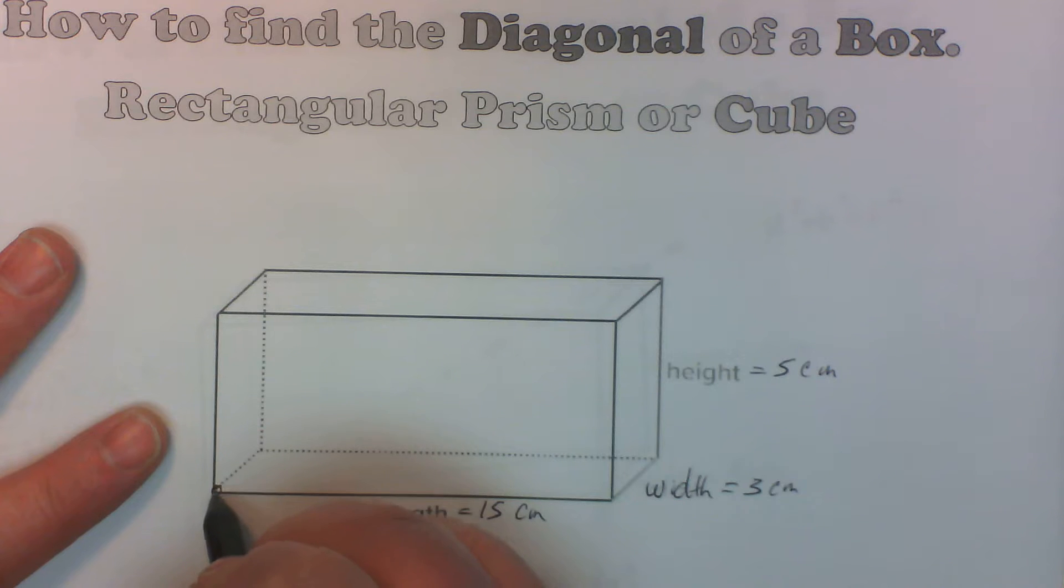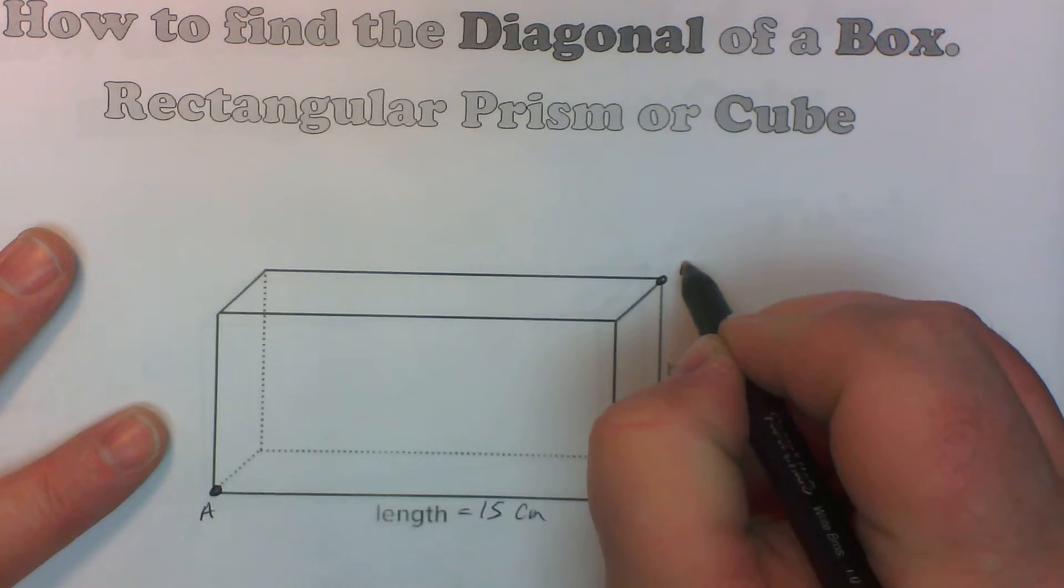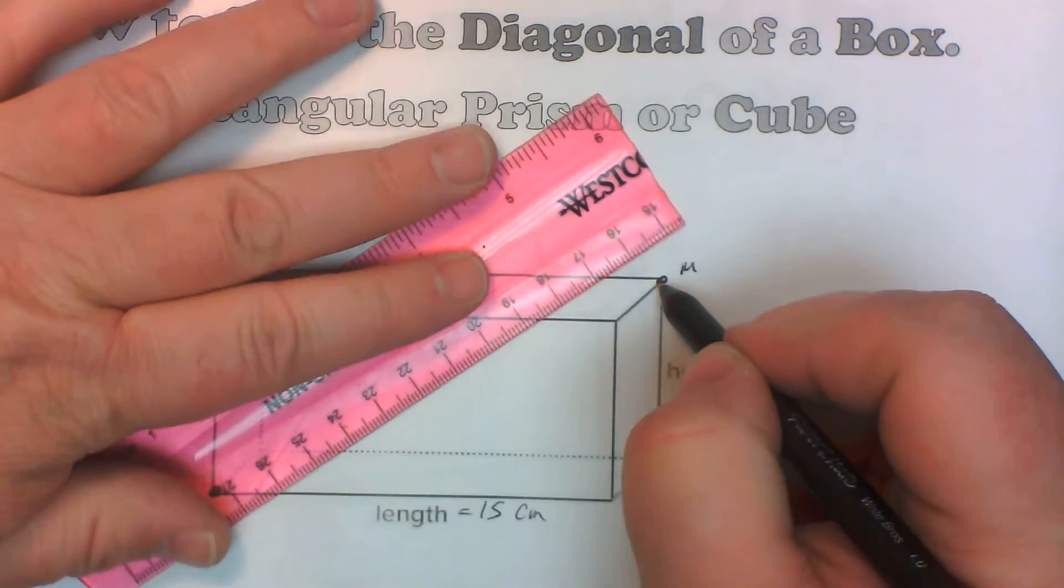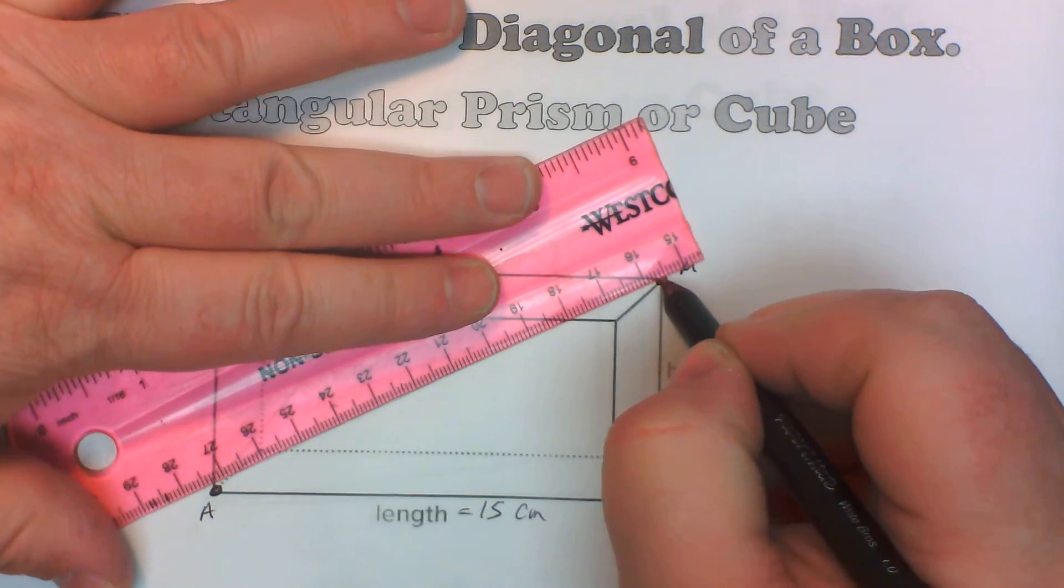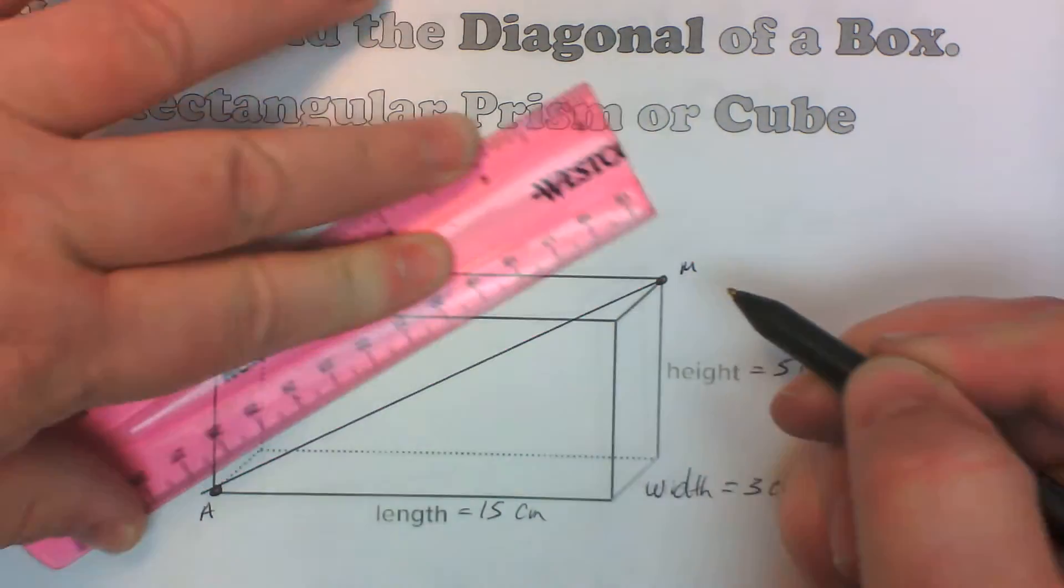So that would be from this point we'll call it A to this point we'll call it M. So to figure that distance out, this distance right here is what we're trying to figure out. All the way across that long distance.